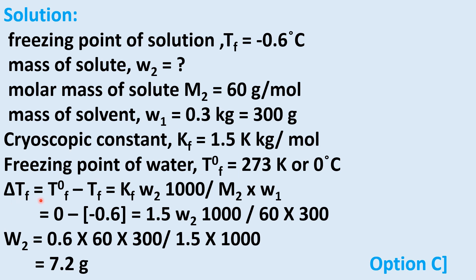Applying ΔTf = T0f − Tf = Kf × W2 × 1000 / (M2 × W1): 0 − (−0.6) = 1.5 × W2 × 1000 / (60 × 300). Solving for W2: W2 = 0.6 × 60 × 300 / (1.5 × 1000) = 7.2 grams. Therefore option C is correct.